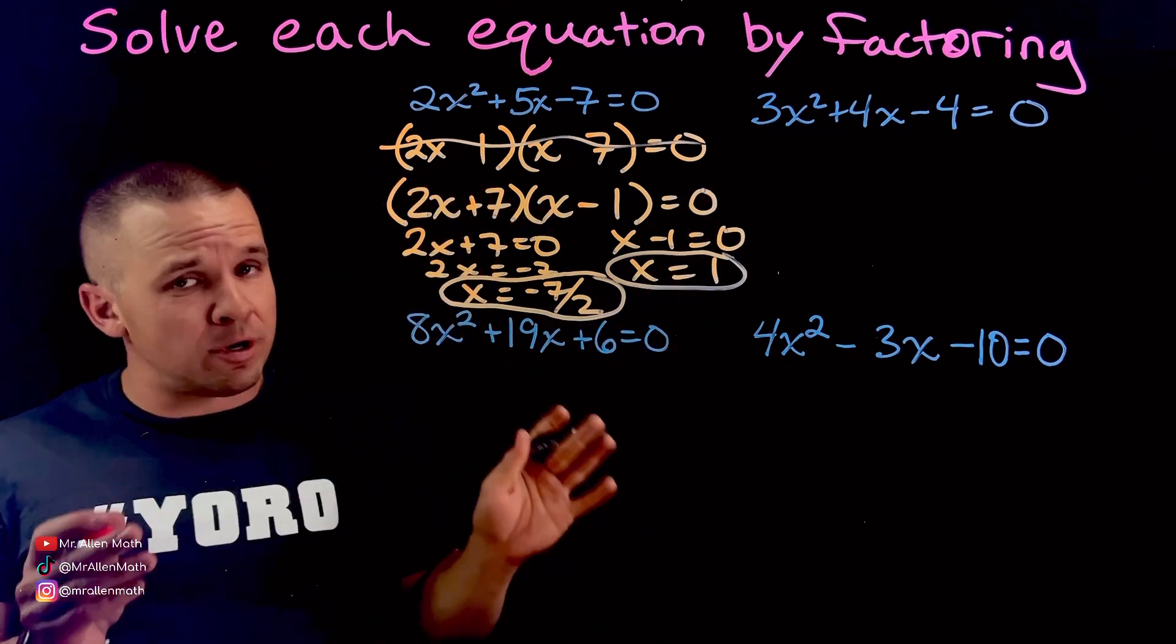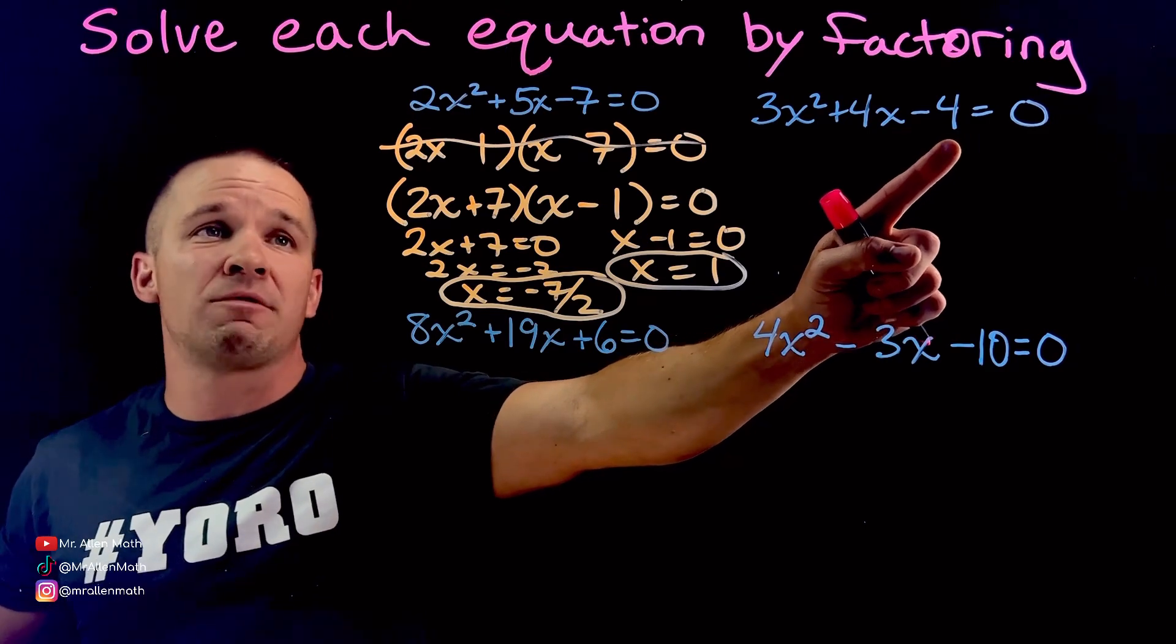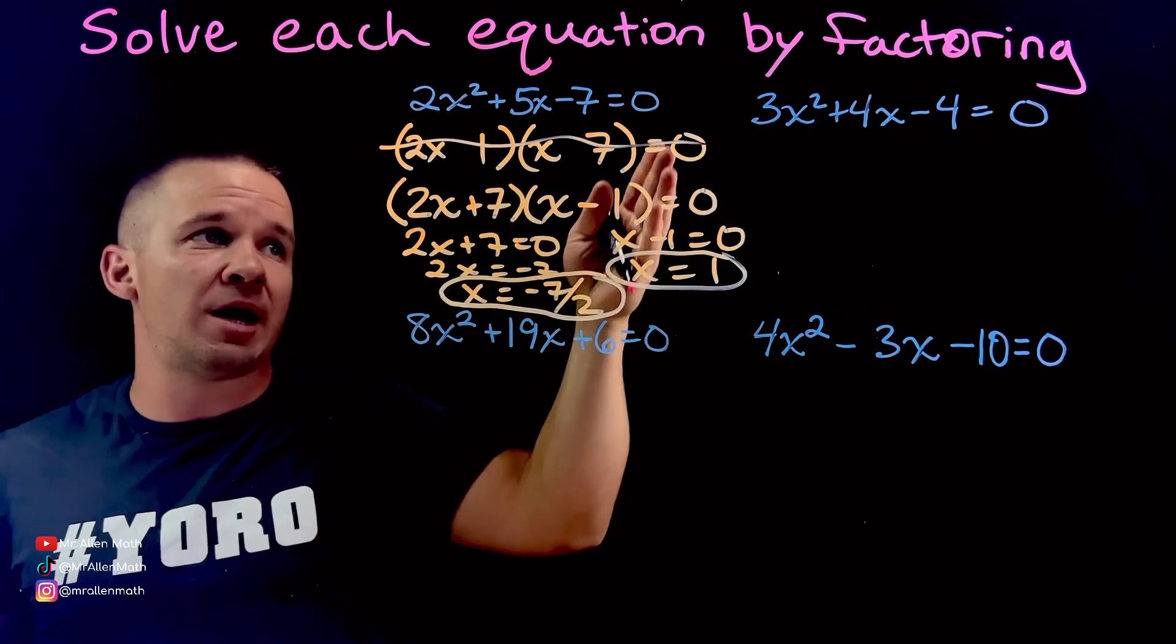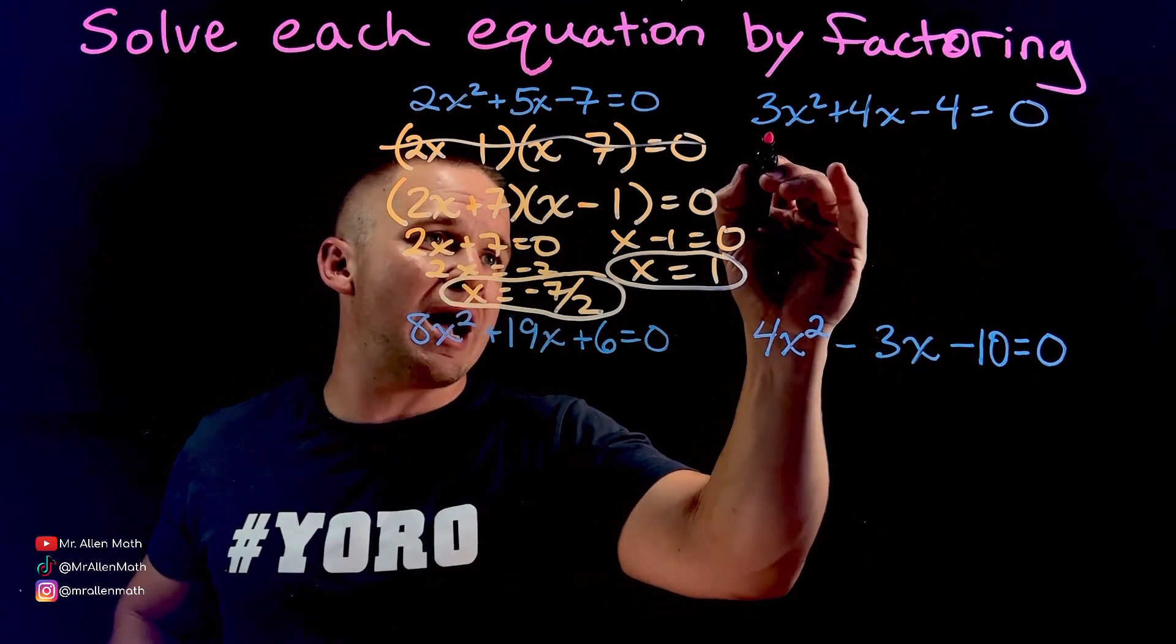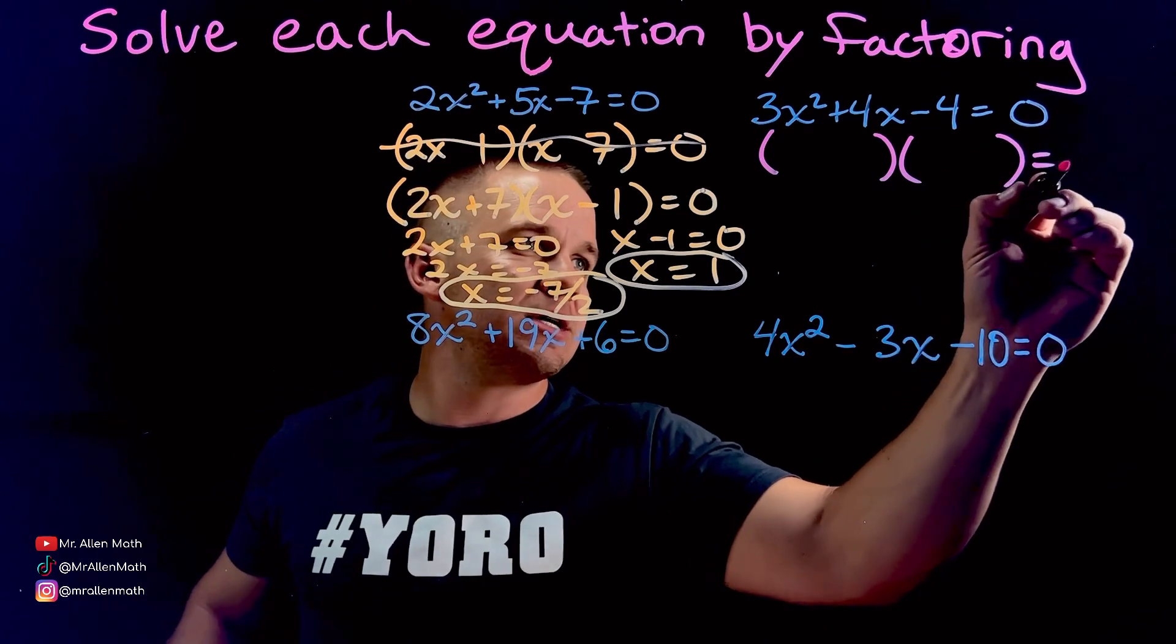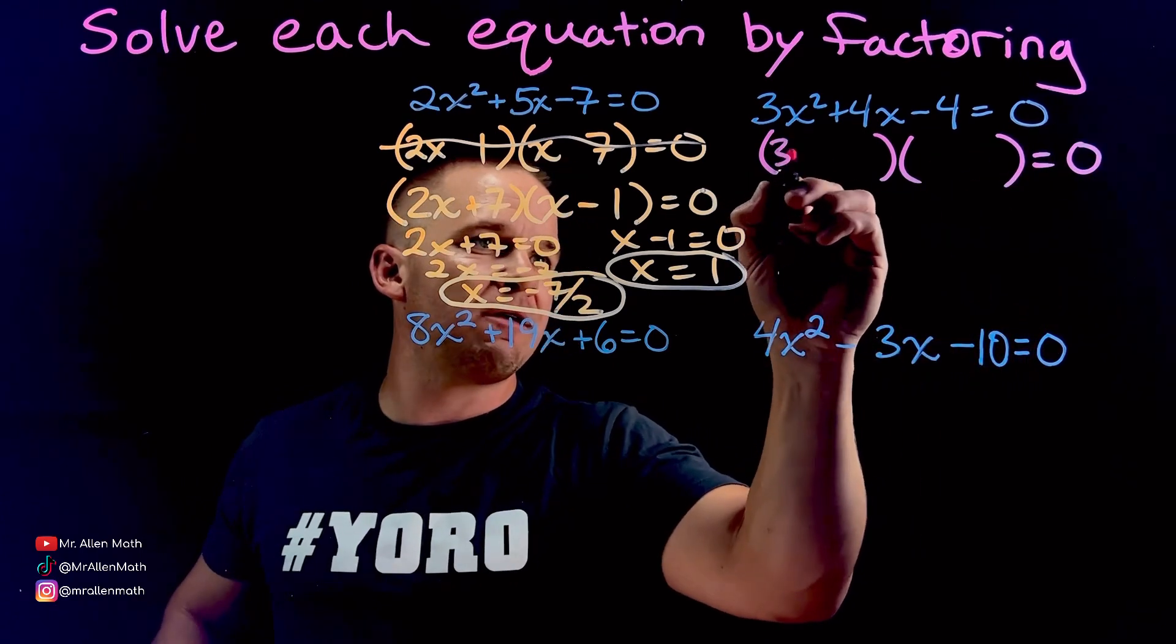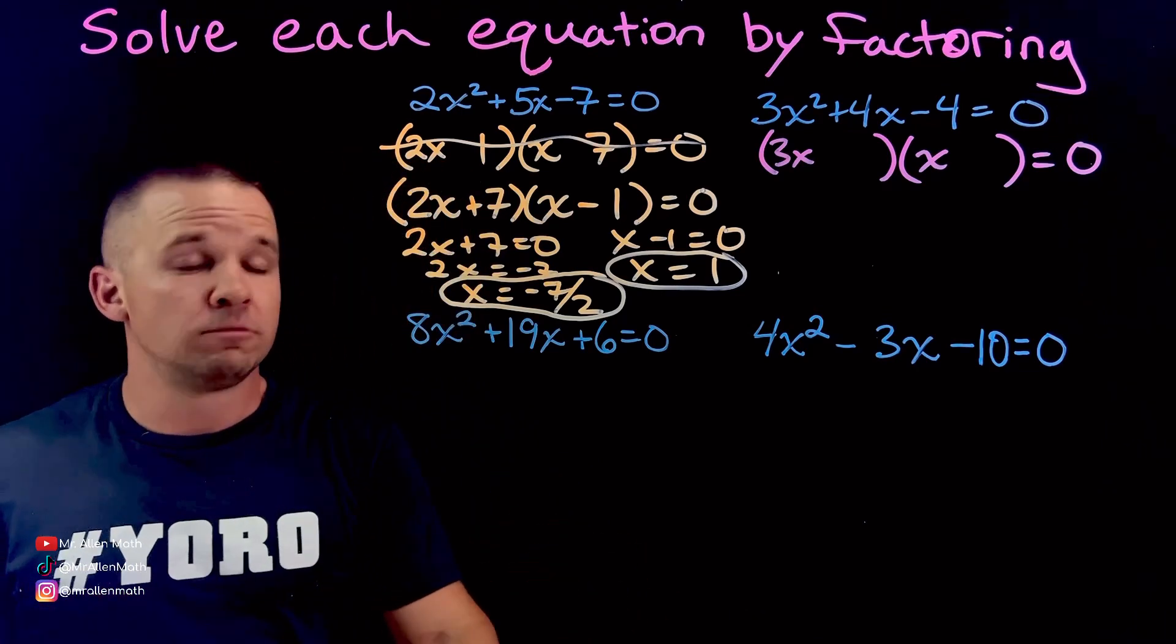All right. Next one. So guess and check's a little trickier here because I do have an even number. There's a couple more possibilities here. This one, it was just 2x and x, 7 and 1. So we'll get it though. One more guess and check try here. And then we'll go to the rainbow method. So I got two sets of parentheses. I know I have to have 3x and x. Cool. We know that's true.